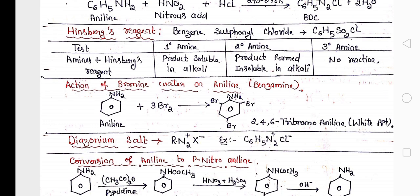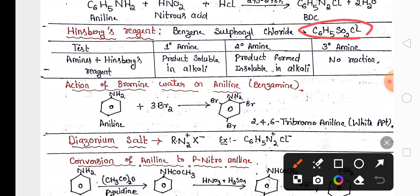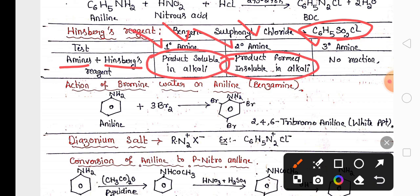Then Hinsberg reagent is highly important. Benzene sulfonyl chloride is the formula and it is used to differentiate primary, secondary and tertiary amines. When you add Hinsberg reagent to amine, if the product formed is soluble in alkali, it is primary amine. If the product formed is insoluble in alkali, it is secondary amine. Tertiary amine does not react with Hinsberg reagent because nitrogen does not have any hydrogen to react.